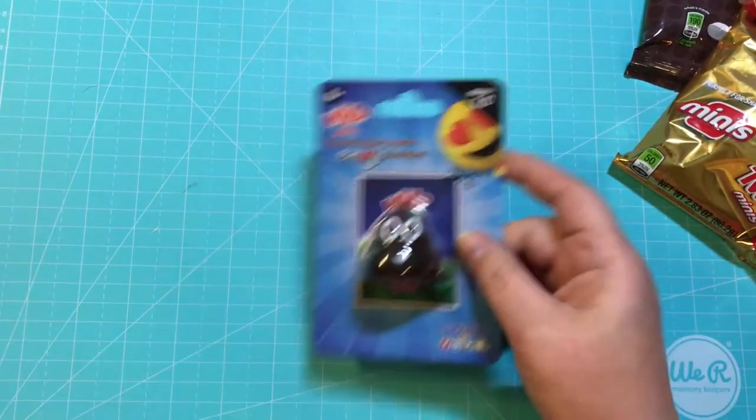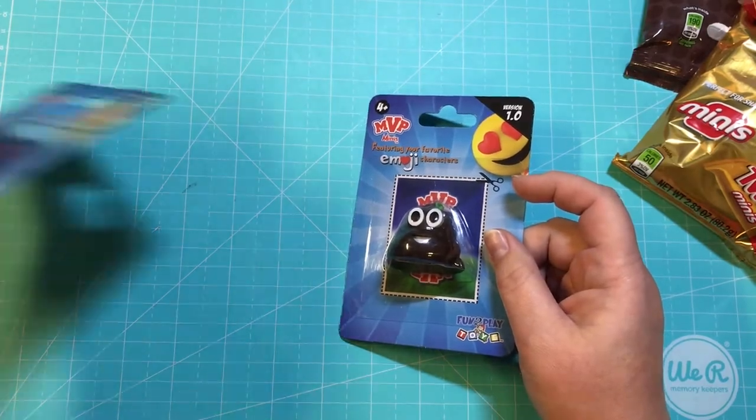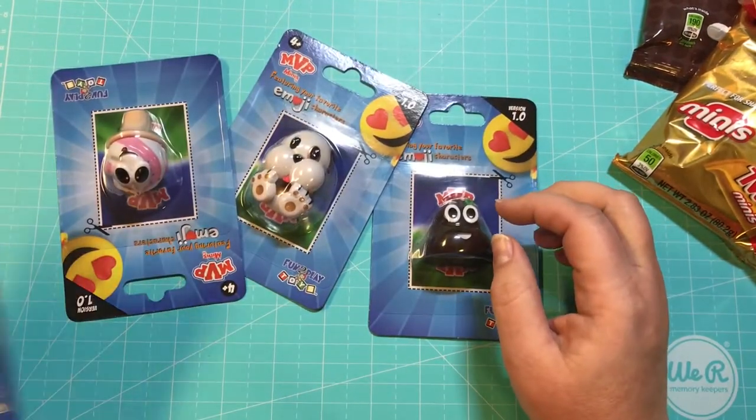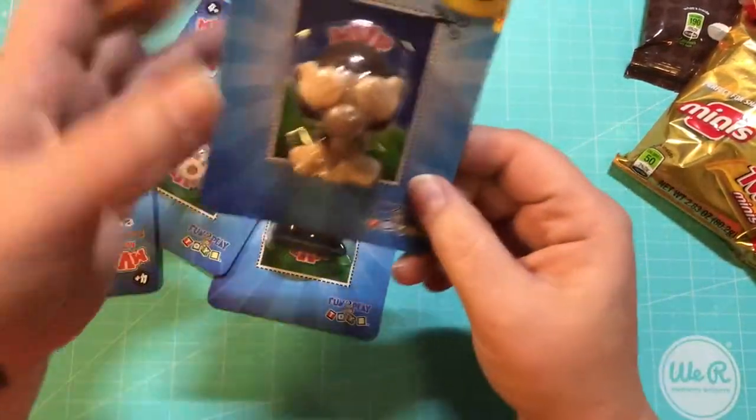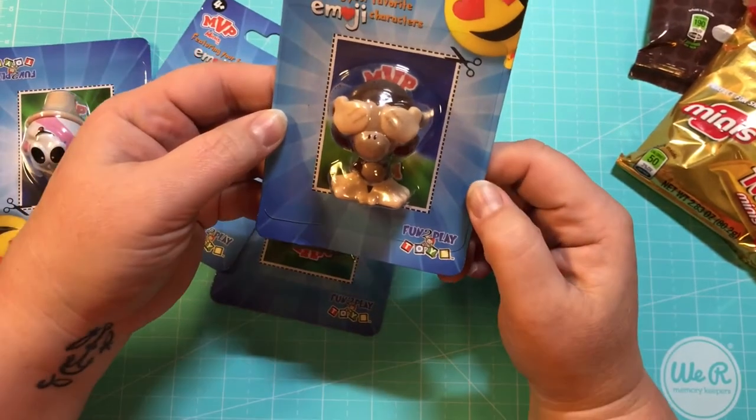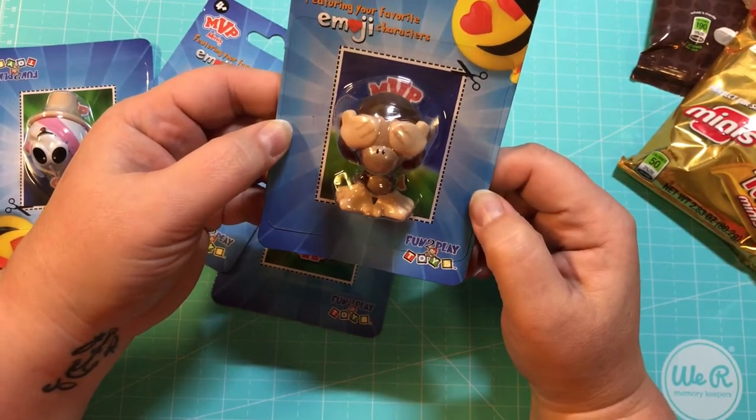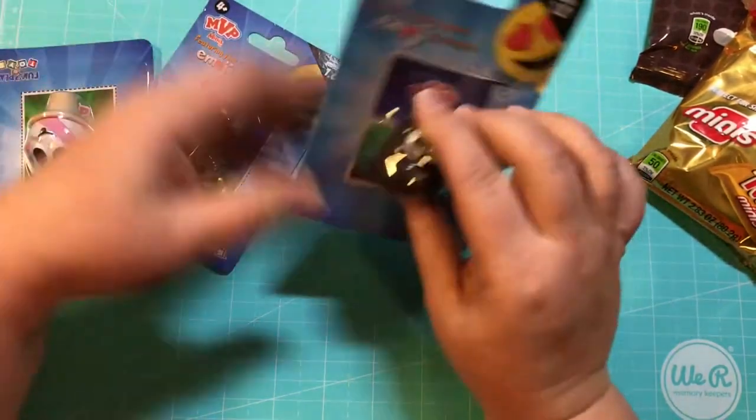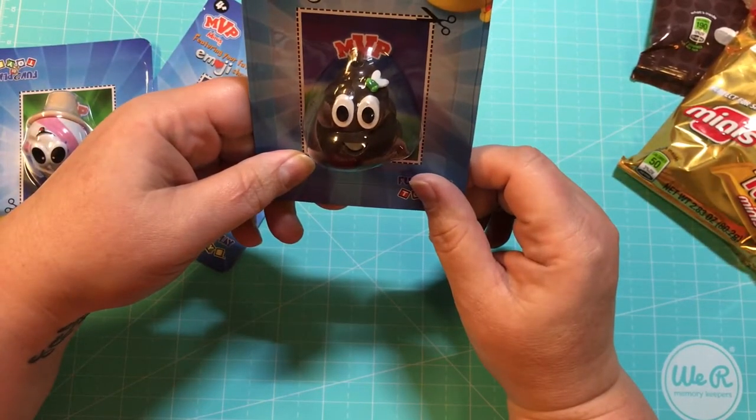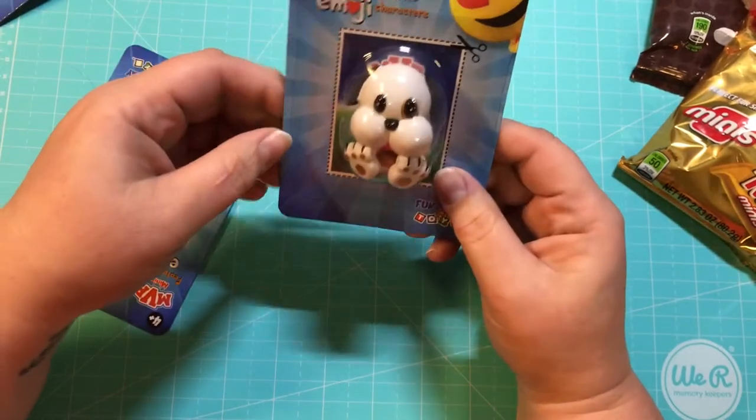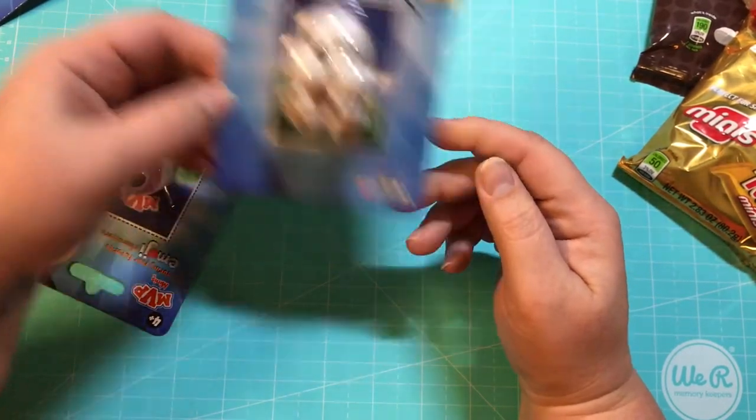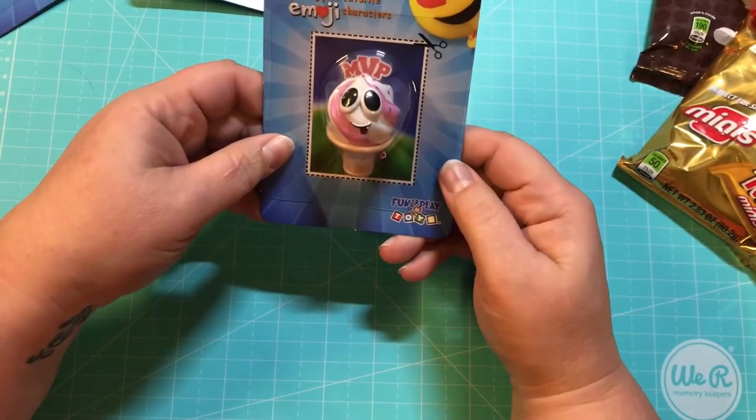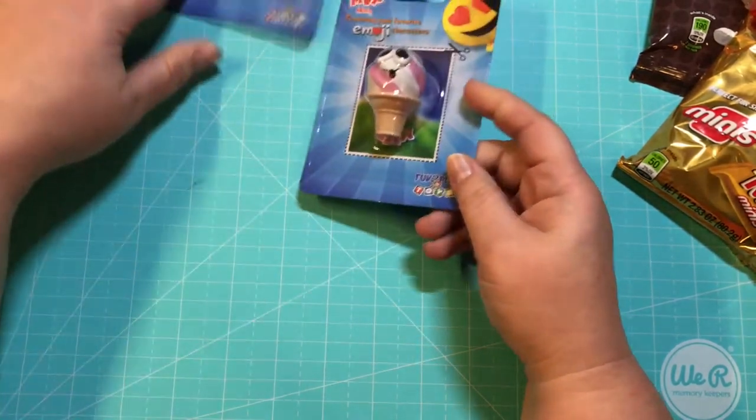And then I picked up these little emoji characters just because they were fun. This is the MVP minis. And so there's the monkey, you know, it doesn't see anything. You've got the poop emoji, a really cute little puppy dog - I love that one - and the ice cream cone.